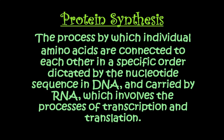Protein synthesis can be broken down into two main steps. The first step is called transcription — the process of taking double-stranded DNA and making messenger RNA out of it. The messenger RNA then travels out of the nucleus, where it is translated by transfer RNA, or tRNA. The tRNA adds the appropriate amino acids in a specific order, and that is what builds the protein.